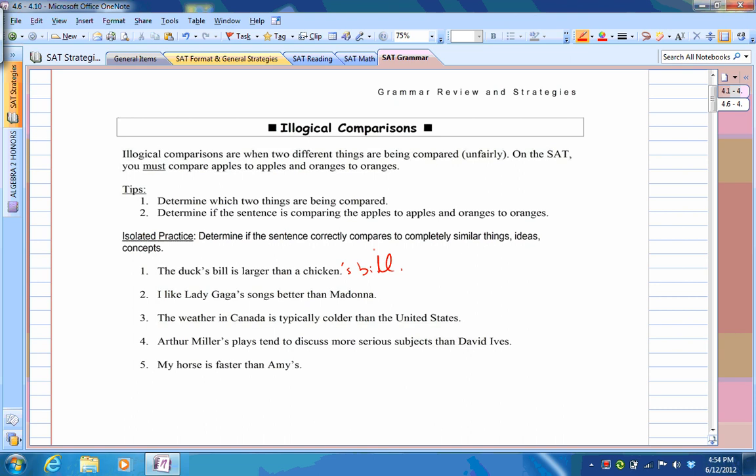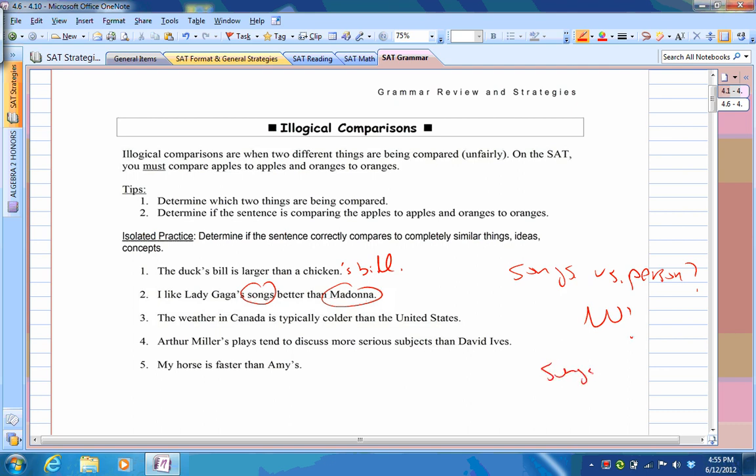Let's look at number two. I like Lady Gaga songs better than Madonna. So you're comparing songs to a person. Do we want to do that? We want to compare songs versus a person? No. We want to compare songs versus songs. So you could probably put apostrophe s, and that would be enough, or you could put apostrophe s then songs afterwards. But by putting apostrophe s, then we're implying that we're comparing something that belongs to Madonna, meaning her songs, to Lady Gaga songs.